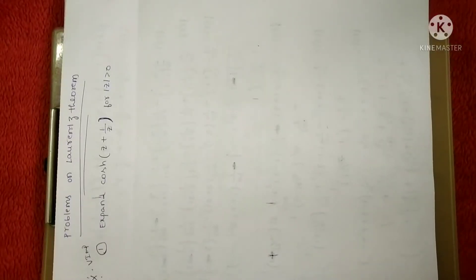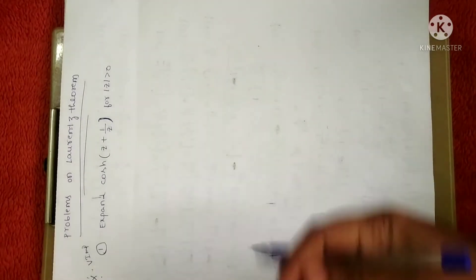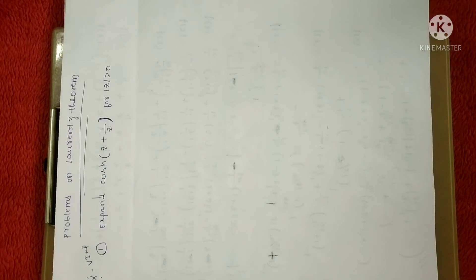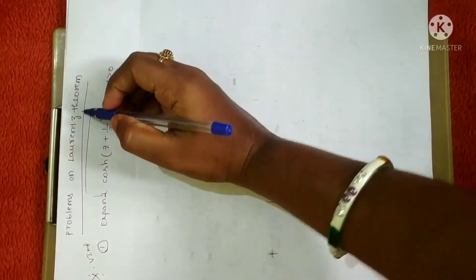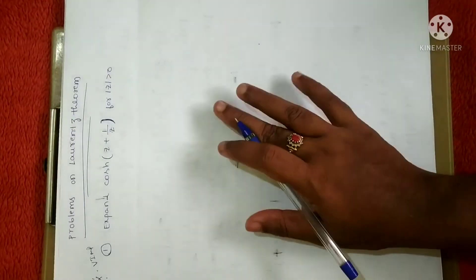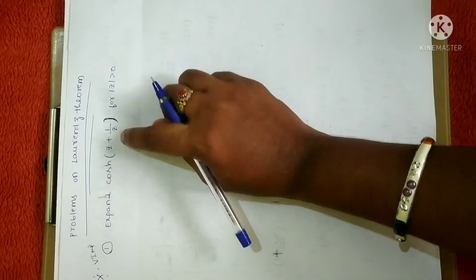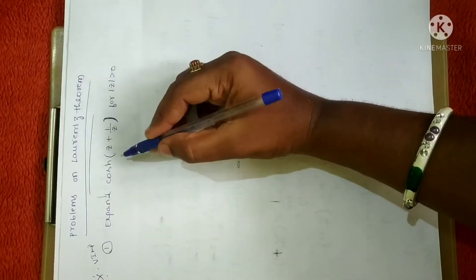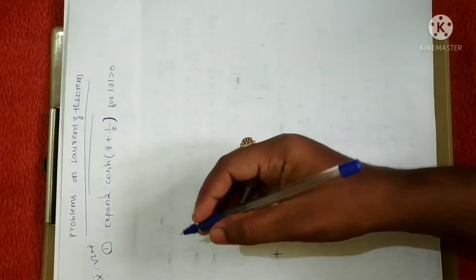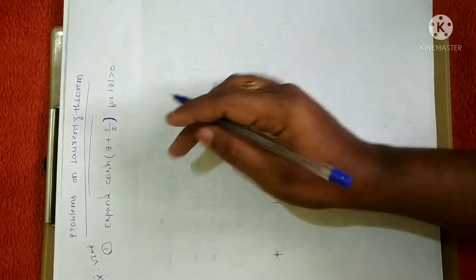Hello everyone. In the previous session I solved problems based on Taylor series and Maclaurin series. In this session let me solve problems based on the Laurent theorem. As I have already covered this theorem in the previous session, please go through the statement. I will be writing directly. This is one of the important problems — they will give cosh(z + 1/z) or sinh(z + 1/z).